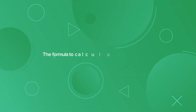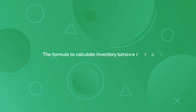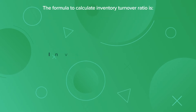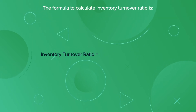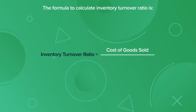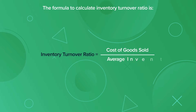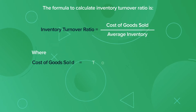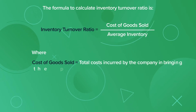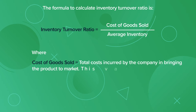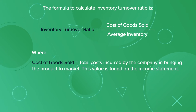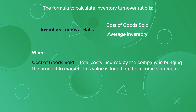The formula to calculate inventory turnover ratio is: inventory turnover ratio equals cost of goods sold divided by average inventory, where cost of goods sold equals total costs incurred by the company in bringing the product to market. This value is found on the income statement.